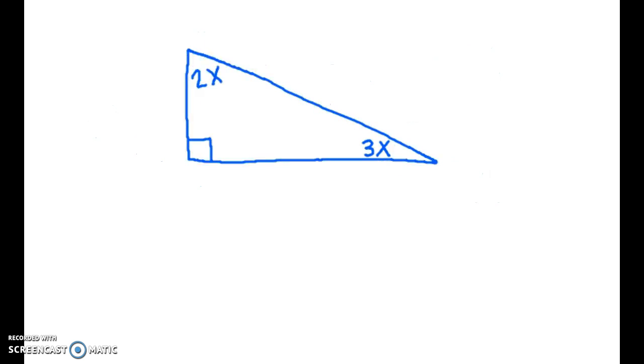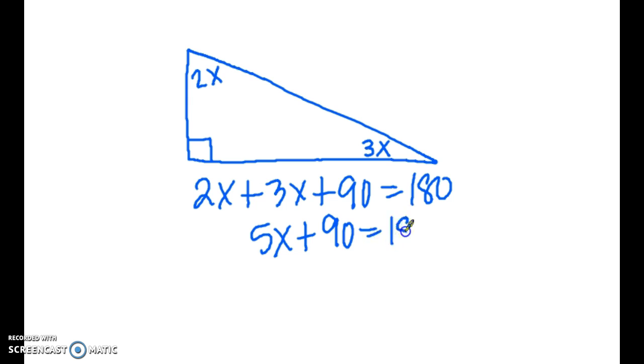All right, so for this one I have 2x, 3x, and then I have this angle. Remember that this means 90 degrees. So 2x plus 3x plus 90 equals 180 degrees. 2x plus 3x is 5x. 180 minus 90 is 90. 90 divided by 5 is 18.